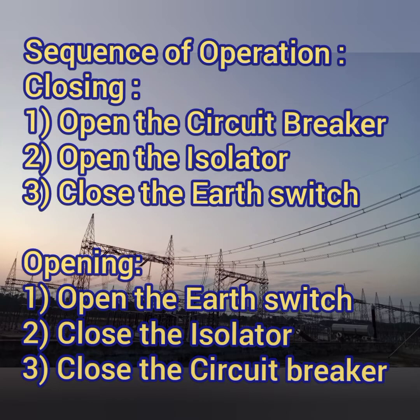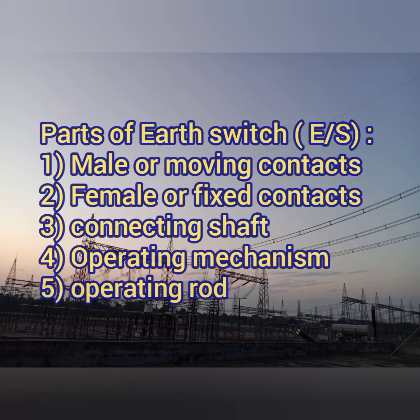The earth switch comprises main parts like male or moving contacts, then female or fixed contacts, then the connecting shafts which are used for operation, then rotating mechanisms or the operating mechanism for electrical operations, and the operating rod where the male contact is fixed. This earth switch has certain rating capacities for withstanding current and short circuit withstanding current, and is provided according to the voltage level or voltage rating.